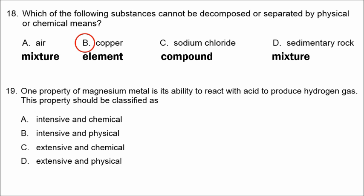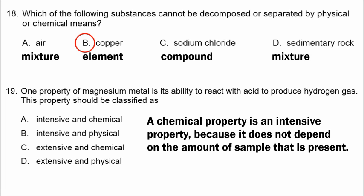Number nineteen refers to a chemical property of magnesium — its ability to react with acid to produce hydrogen gas. A chemical property is an intensive property because it doesn't depend on the amount of sample. A small or large amount of magnesium is still going to react with the acid. The correct answer is A.